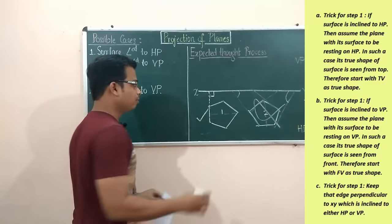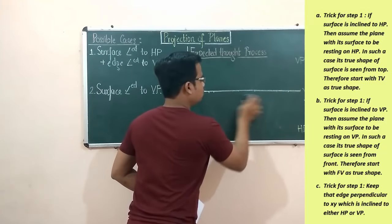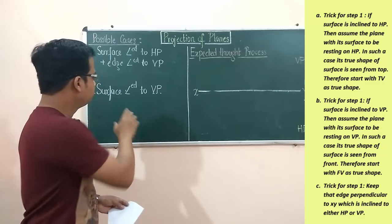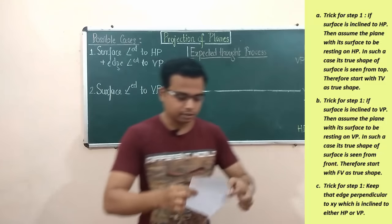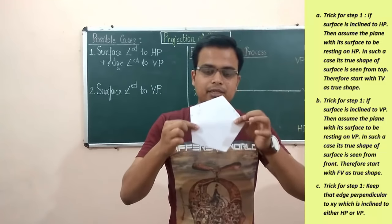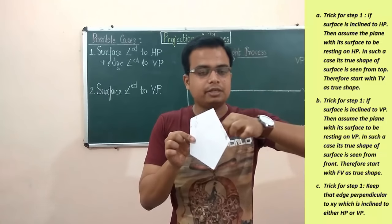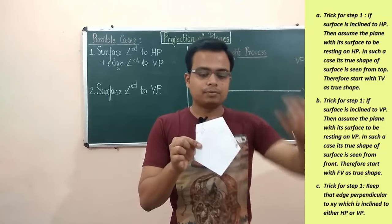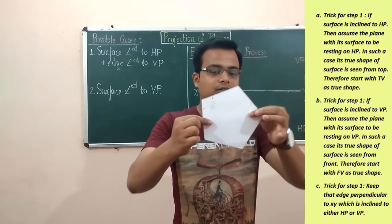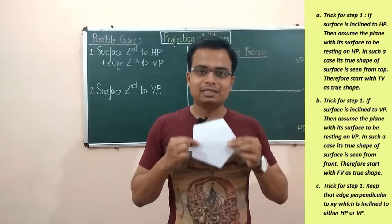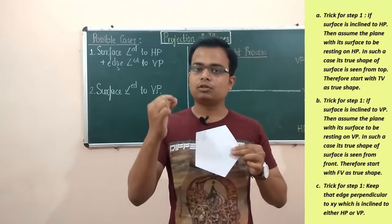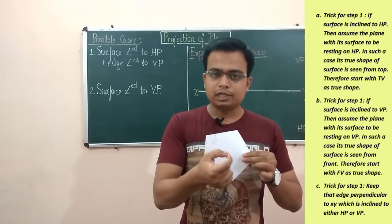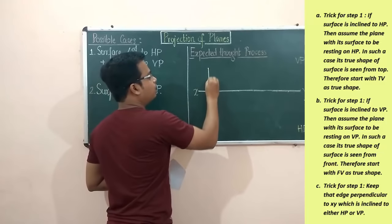Now we're going to talk about the second part where the surface is inclined to VP. This is the inclination phi that the surface makes with the vertical plane, and this angle can only be seen from the top. Our initial assumption is that the entire surface is resting on the vertical plane, and you can see the true shape from the front — therefore you have to begin by making the front view first.